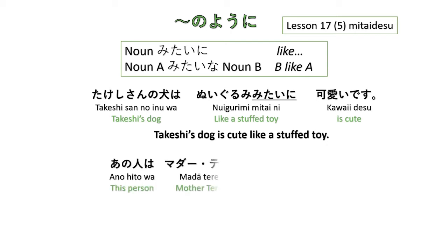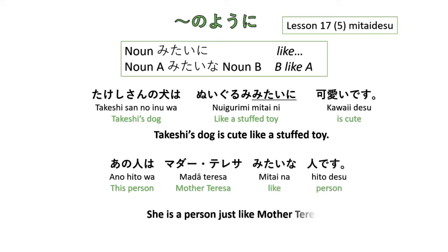Ano hito wa Mada Teresa mitai na hito desu — She (or he, depending on context) is a person just like Mother Teresa. Here Mada Teresa is A, and then mitai na, and then B: mitai na hito means 'a person just like Mother Teresa'.